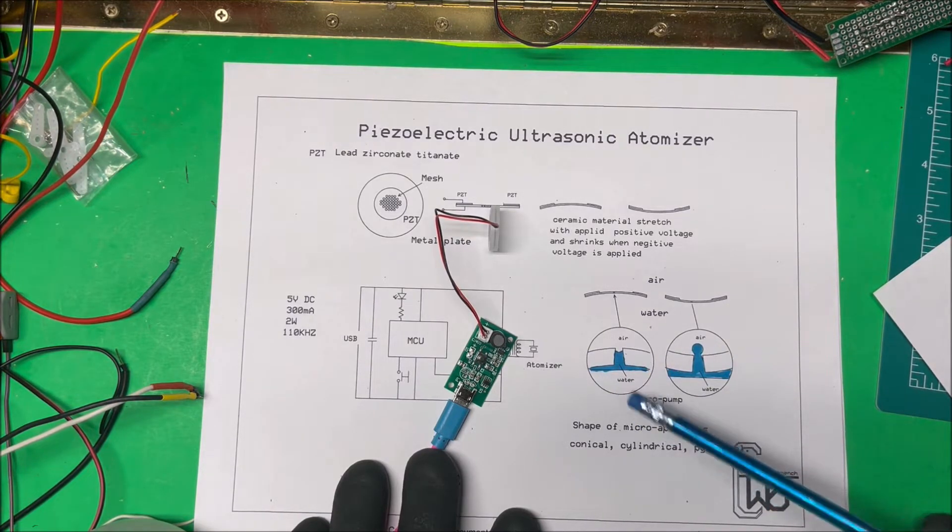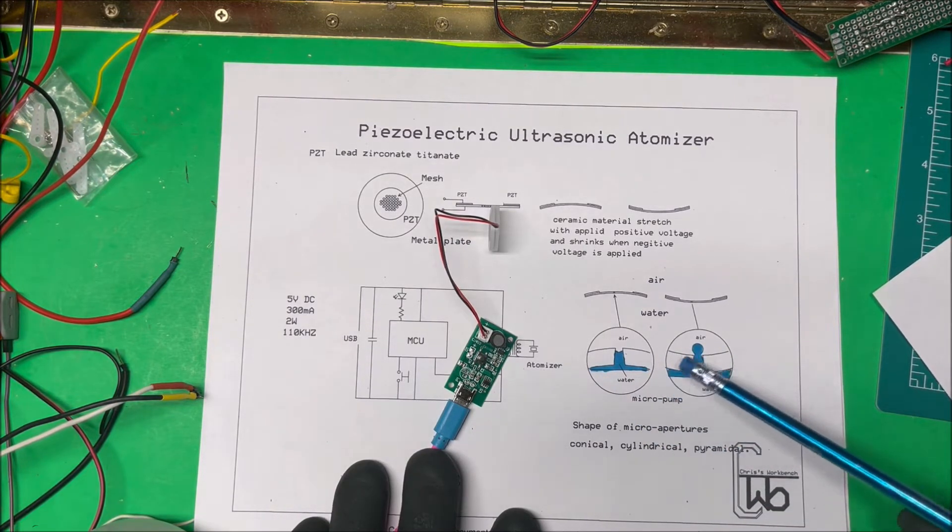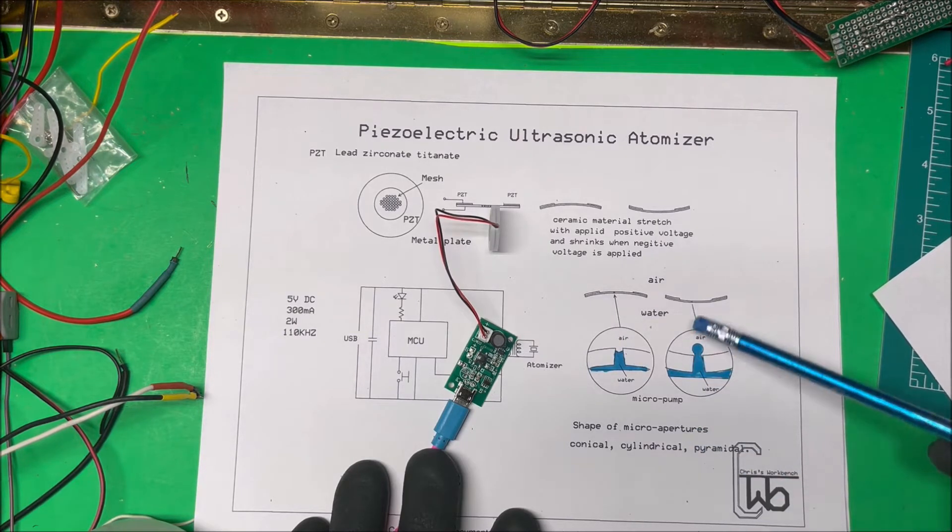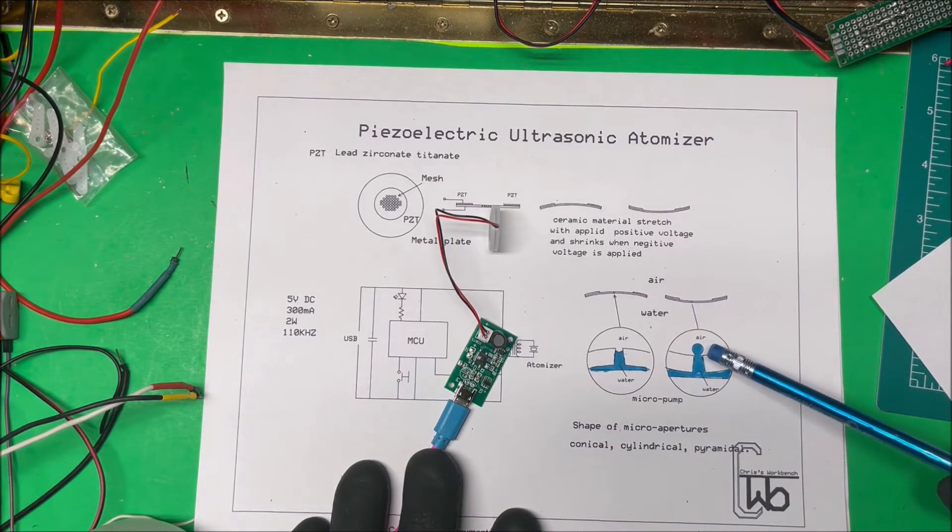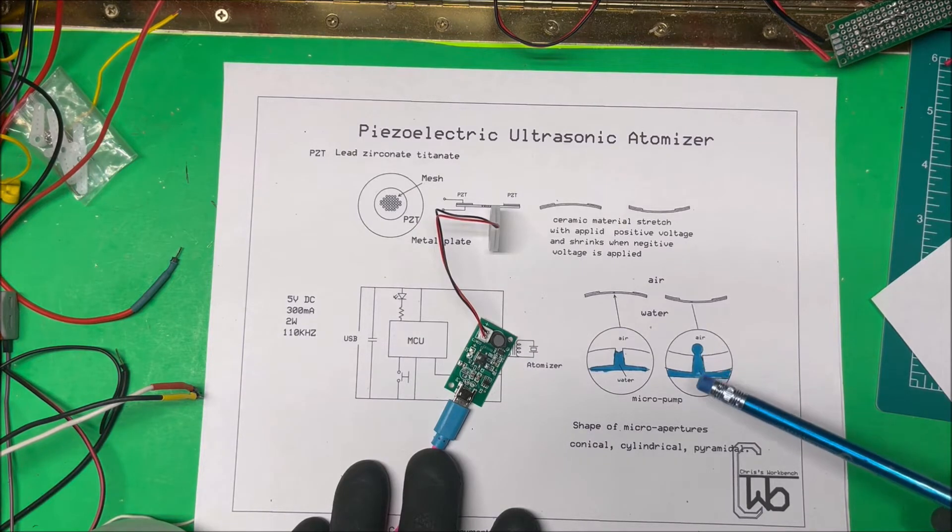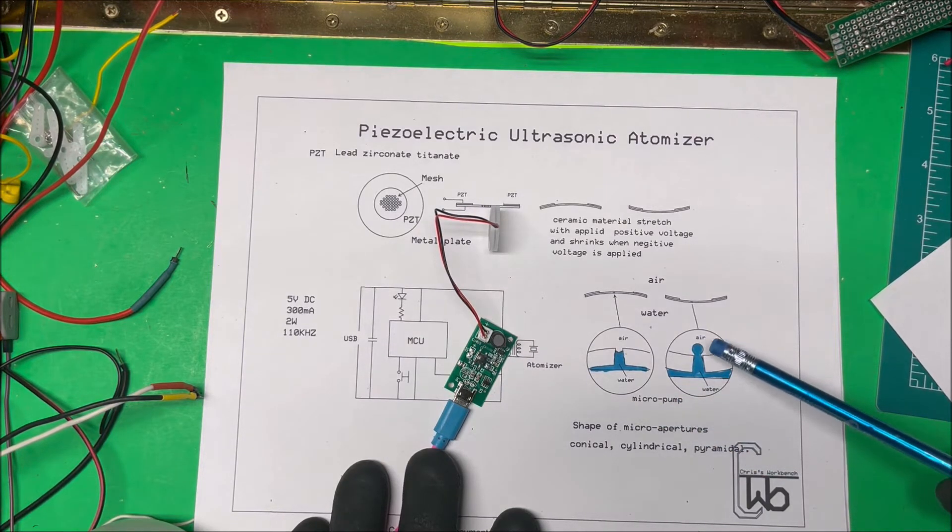But I think most of them are conical shaped here, and they just act as a little pump. This vibrates up and down and it pumps the water up through these little micro apertures here and forms little droplets in the air.